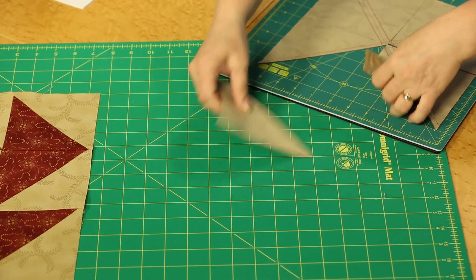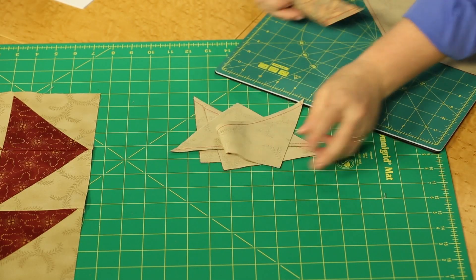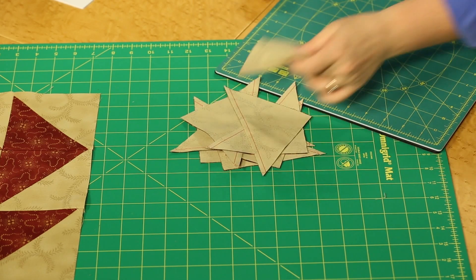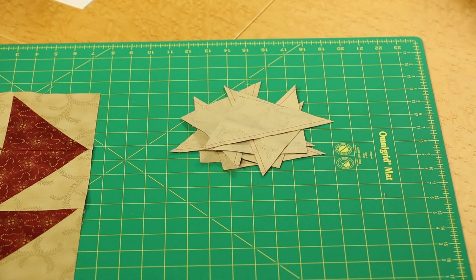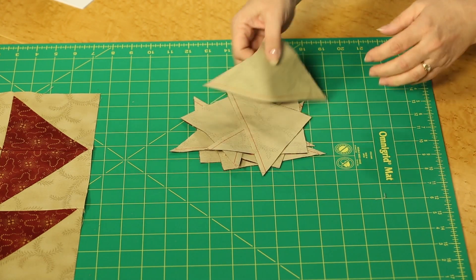So my cutting now is done. I have eight pieces, eight at a time triangle squares. I'm going to take them to the iron.